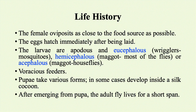The female of dipterans oviposits as close to the food source as possible. The eggs hatch immediately after being laid, or the flies may be ovoviviparous. The larvae in this case are apodous and eucephalous — apodous means without legs.